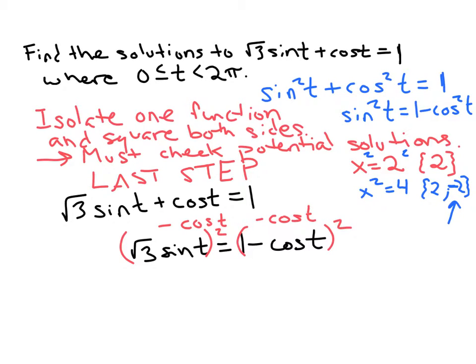When I square the left side, I would square each part. So the √3 squared is just 3 and then sin²t. The nice thing there is I've gotten rid of that ugly √3 for now anyway. On the right side, remember that (1 - cos(t))², so that's (1 - cos(t)) times (1 - cos(t)).